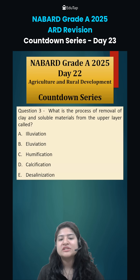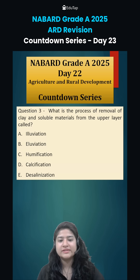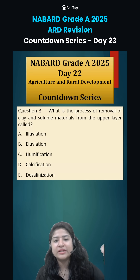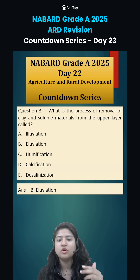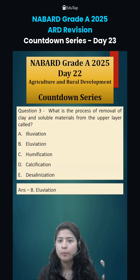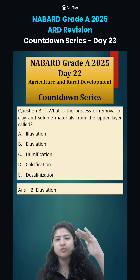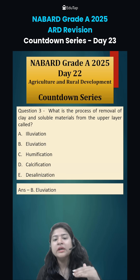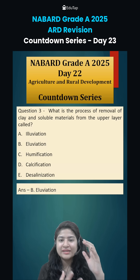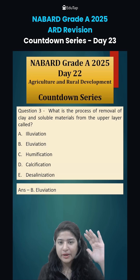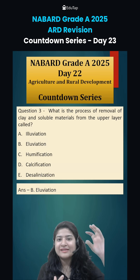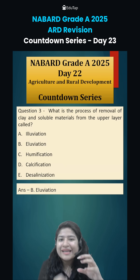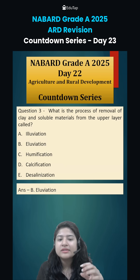Next is: what is the process of removal of clay and soluble material from the upper layer called? When these materials from the upper layer are washed out, that is known as eluviation — option number two. The process of moving or washing out is known as eluviation, and then these particles that have been washed out will be accumulated somewhere — these washed-out particles will be washed in somewhere. This washing in is known as what?